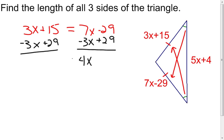Get rid of the 3X from both sides. I'm going to get rid of the minus 29 from both sides. Now I'm left with 4X equal to 44. And I find out that the value of X is 11.